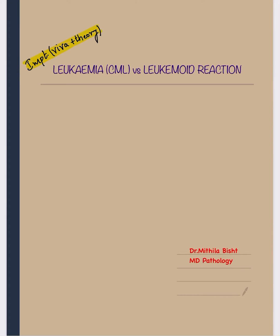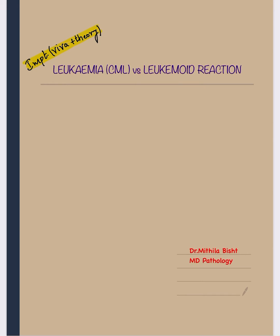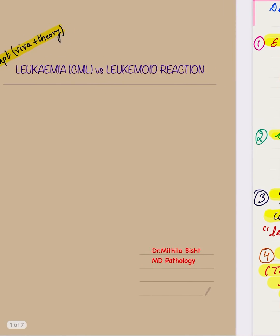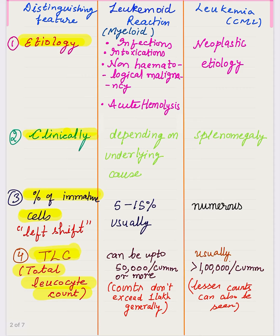Hello and welcome everyone. The topic of this lecture is leukemia versus leukemoid reaction, which is an important topic for viva as well as theory. Leukemoid reaction is given this name because it resembles leukemia on peripheral smear examination — it mimics leukemia on the peripheral picture. It is commonly confused with chronic myeloid leukemia. Let's discuss the various differences.